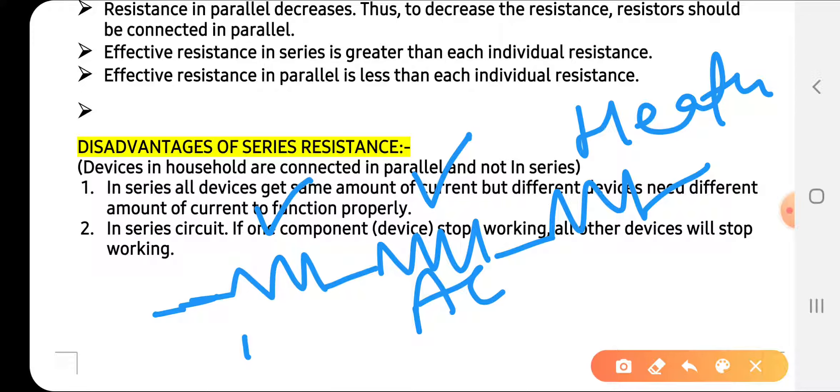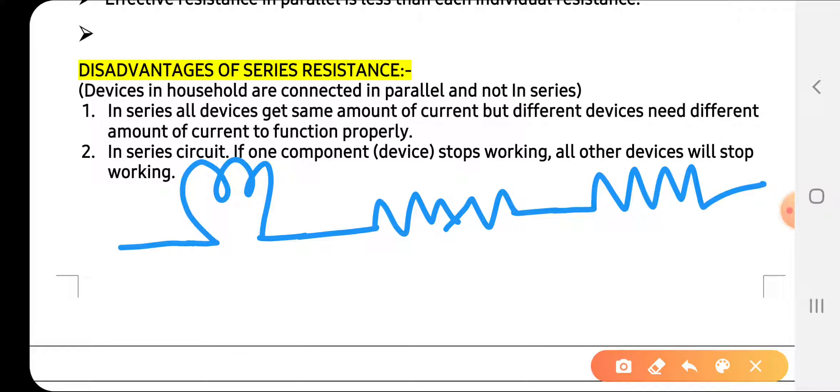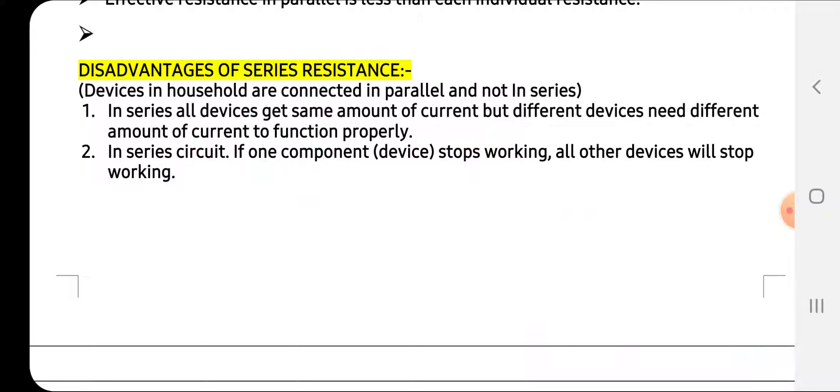In series circuit, if one component or device stops working, all others will stop. For example, if we use a bulb along with an electric heater and refrigerator connected in series, if the bulb gets fused or broken, current flow will stop and everything will stop working because the circuit breaks in series. But if they are in parallel, this is avoided.